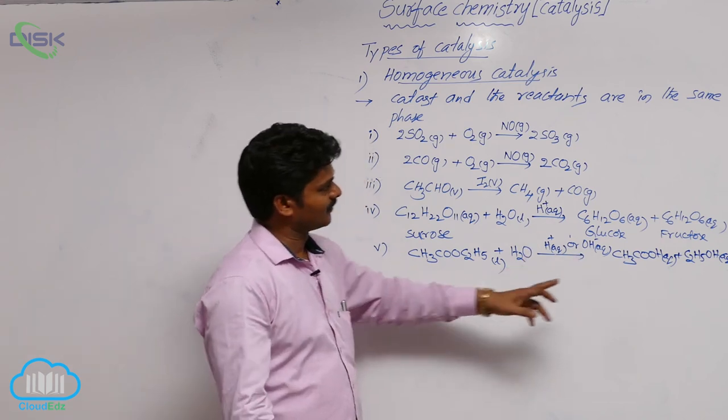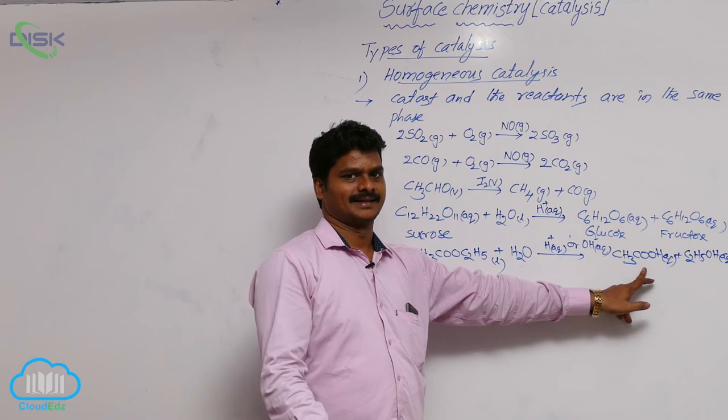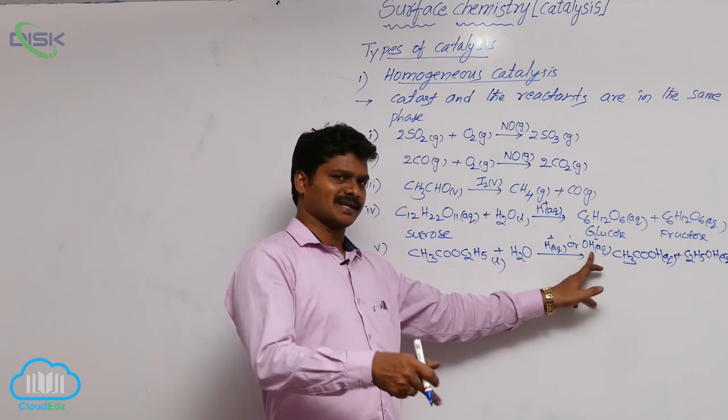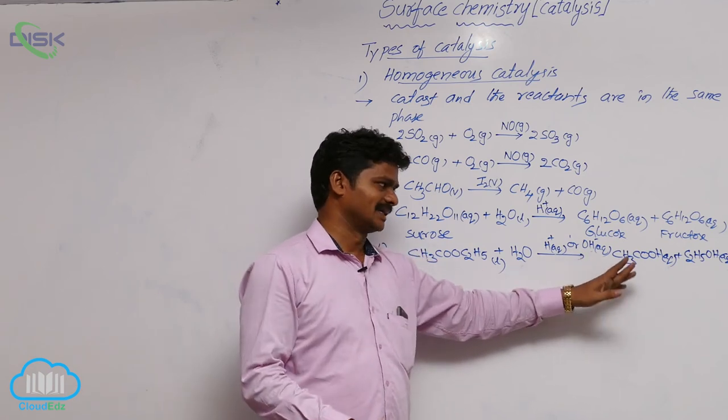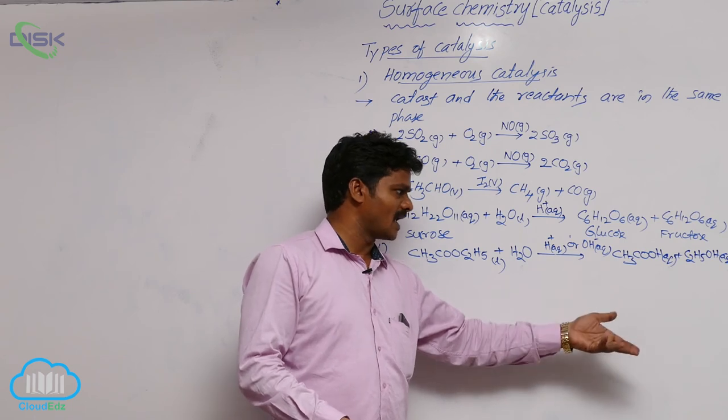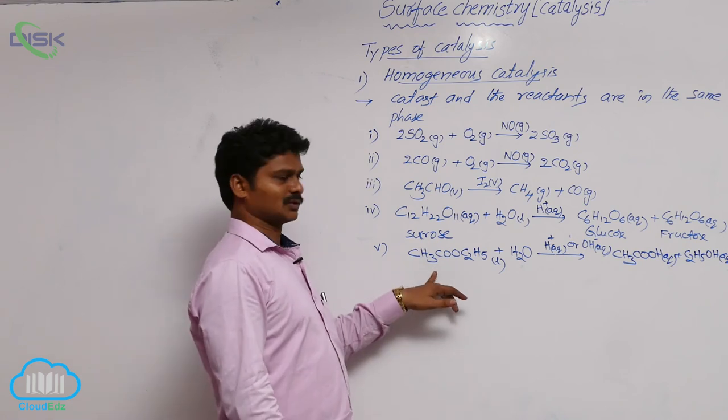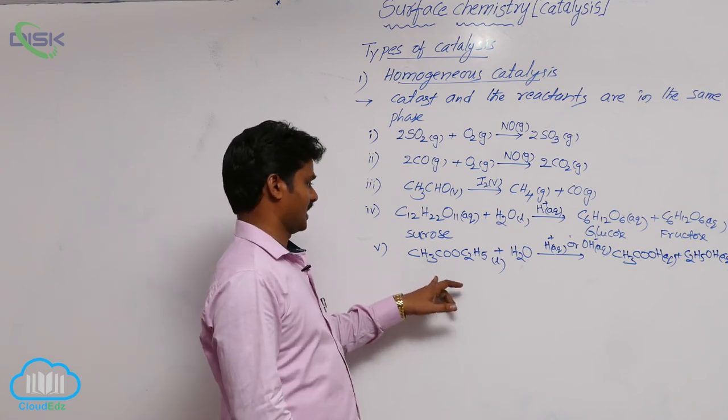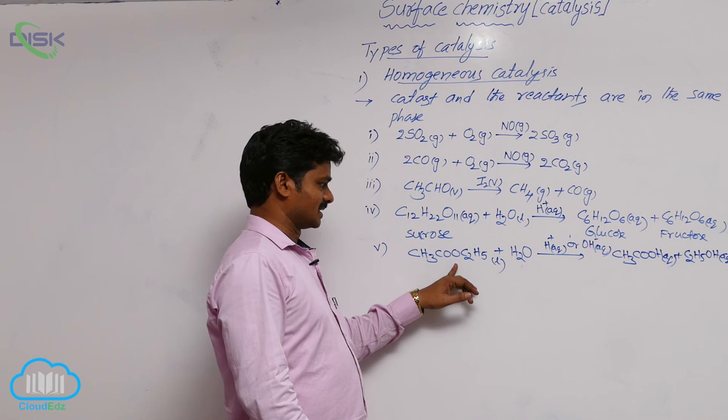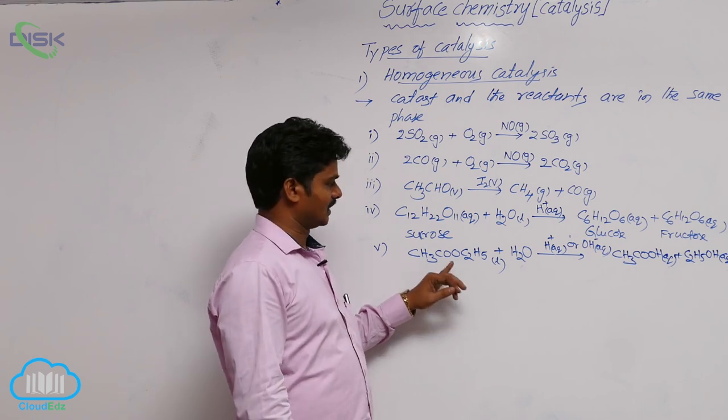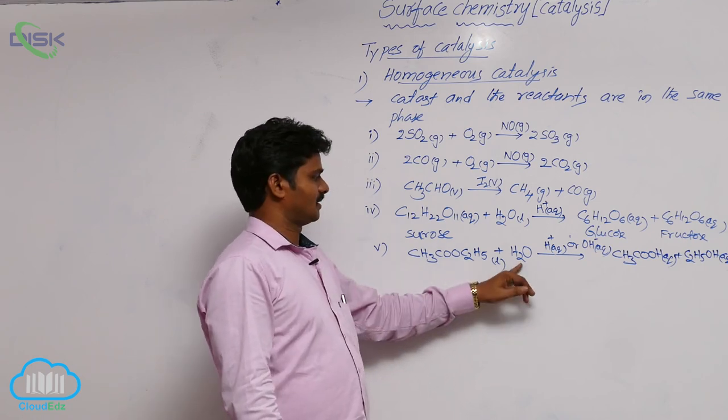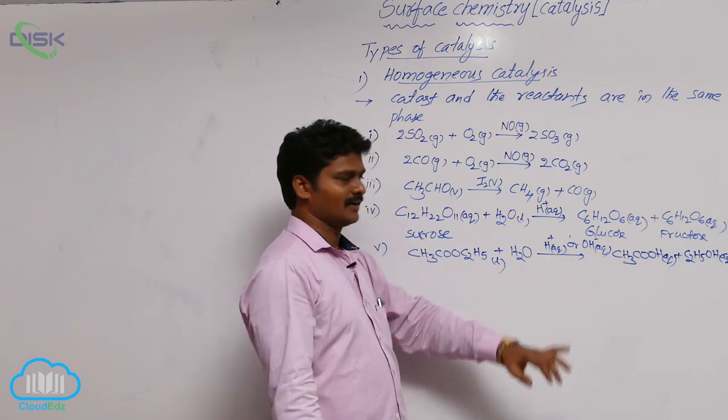If base is used, that base converts the acid formed into salt. That means in the presence of OH minus aqua, here formed is CH3COONa plus C2H5OH. So it is also a homogeneous reaction. Ethyl acetate, an ester, on hydrolysis gives acid and alcohol.